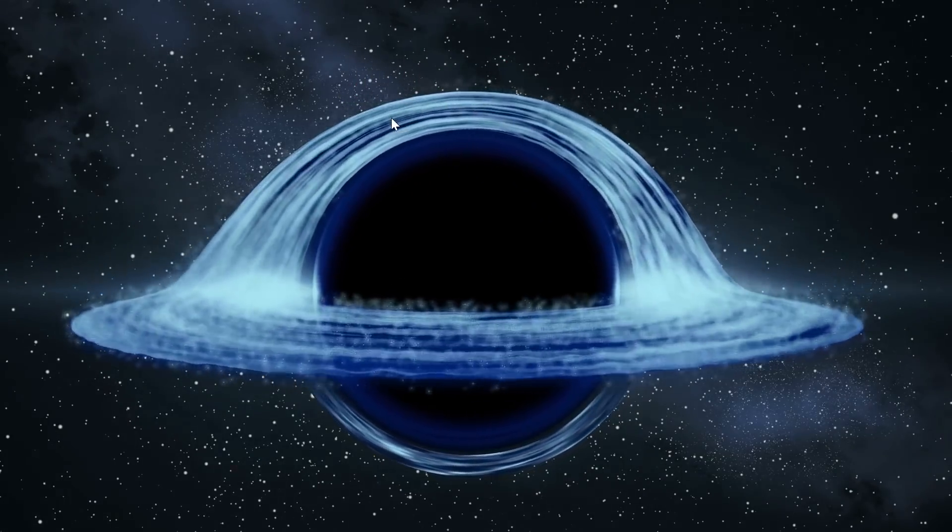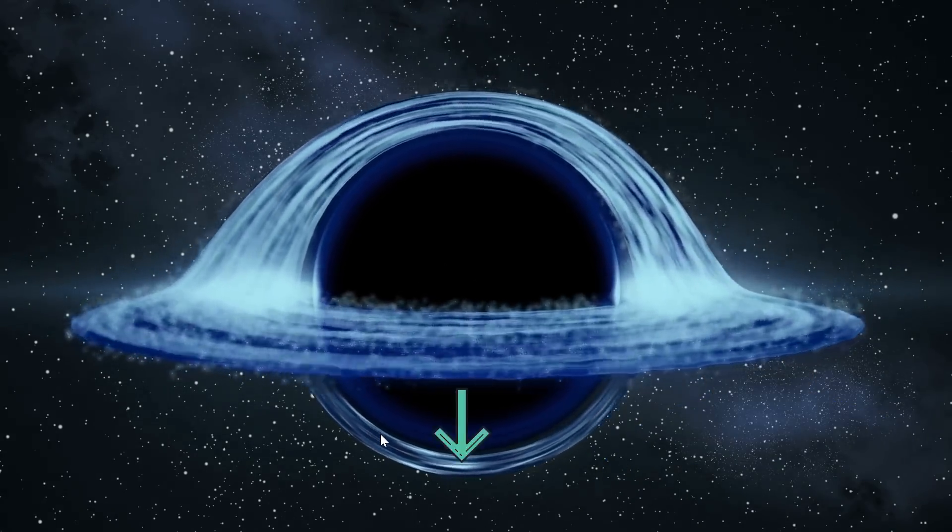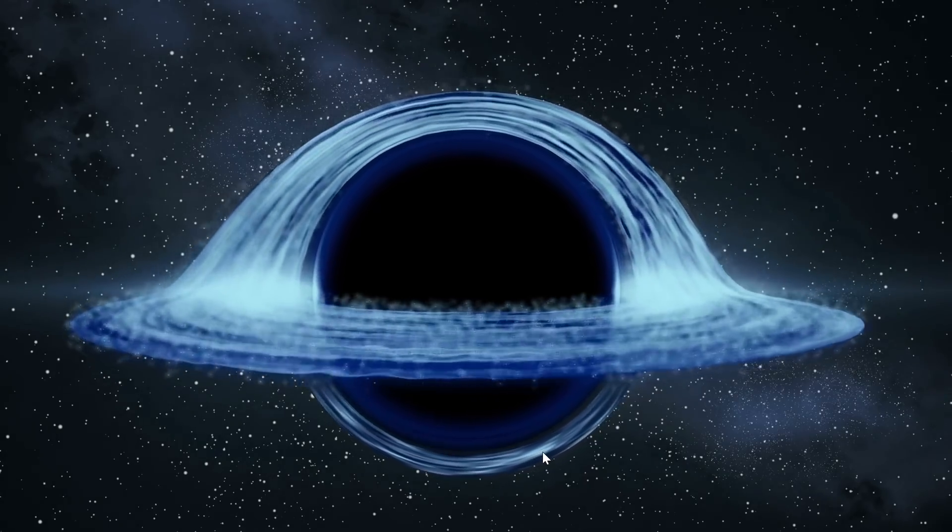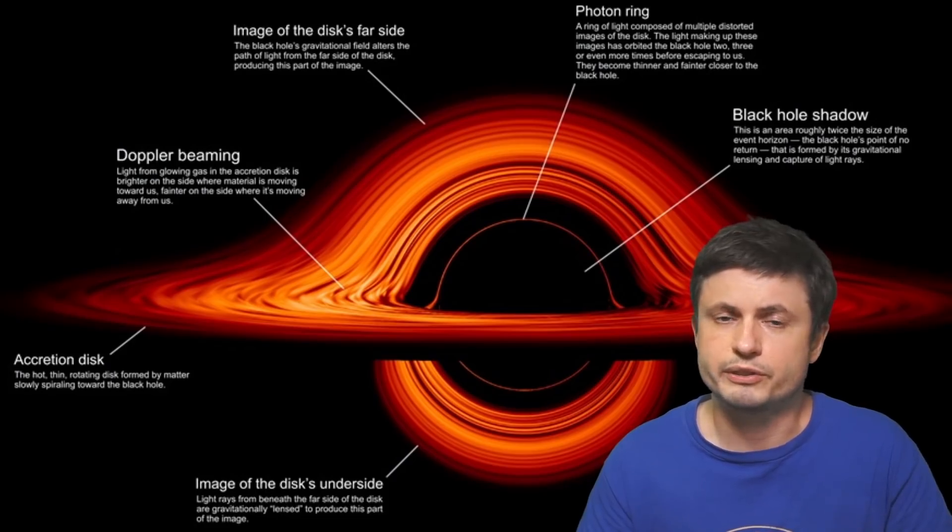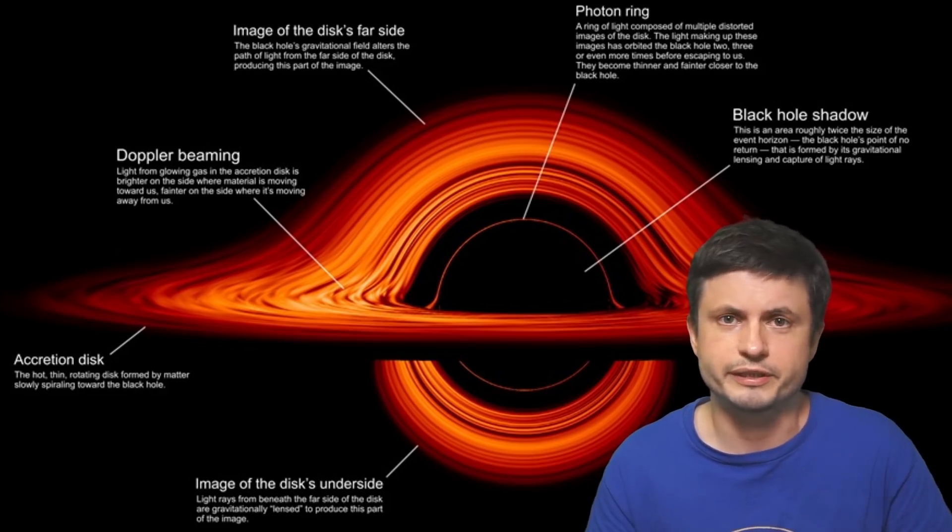So this is actually a reflection coming from the other side of the black hole itself. But on the bottom here we also get to see what the bottom of the disk looks like as well. Now on top of this there are some other features specifically. The feature known as the photon ring that's theoretically believed to exist here as well. But there's actually another video where I discuss this in more detail.